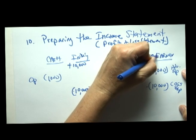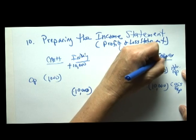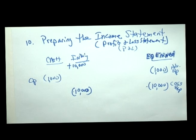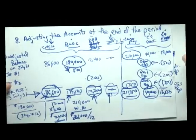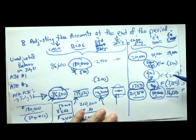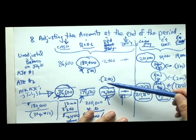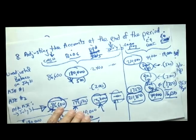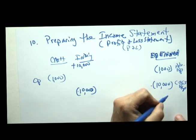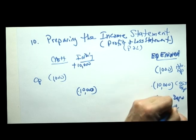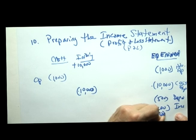Pardon my penmanship, but hopefully you'll understand that EQ is called equity earned. After making our adjusting entries at the end of the period, we had three more entries to equity earned. We subtracted $500,000 for depreciation, we subtracted $200,000 for insurance that expired, and we subtracted $1,750,000 because we owed the bank more in interest. So our equity earned went down another $500,000 for depreciation, $200,000 for insurance, and $1,750,000 for interest.